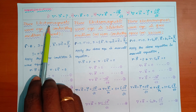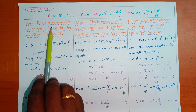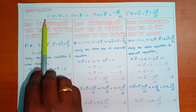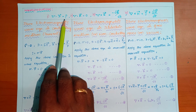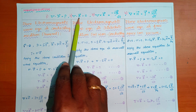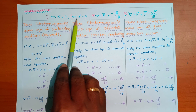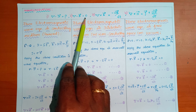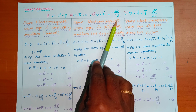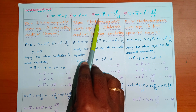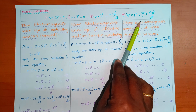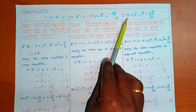The Electromagnetic Wave Equation is based on Maxwell's Four Equations. The first equation is del dot D vector equal to rho, based on Gauss's law of electric field. The second law is del dot B vector equal to 0, based on Gauss's law of magnetic field. The third law is del cross E vector equal to minus dou B by dou t, based on Faraday's law of electromagnetic induction. The fourth law is del cross H vector equal to J plus dou D vector by dou t, based on Ampere's law.